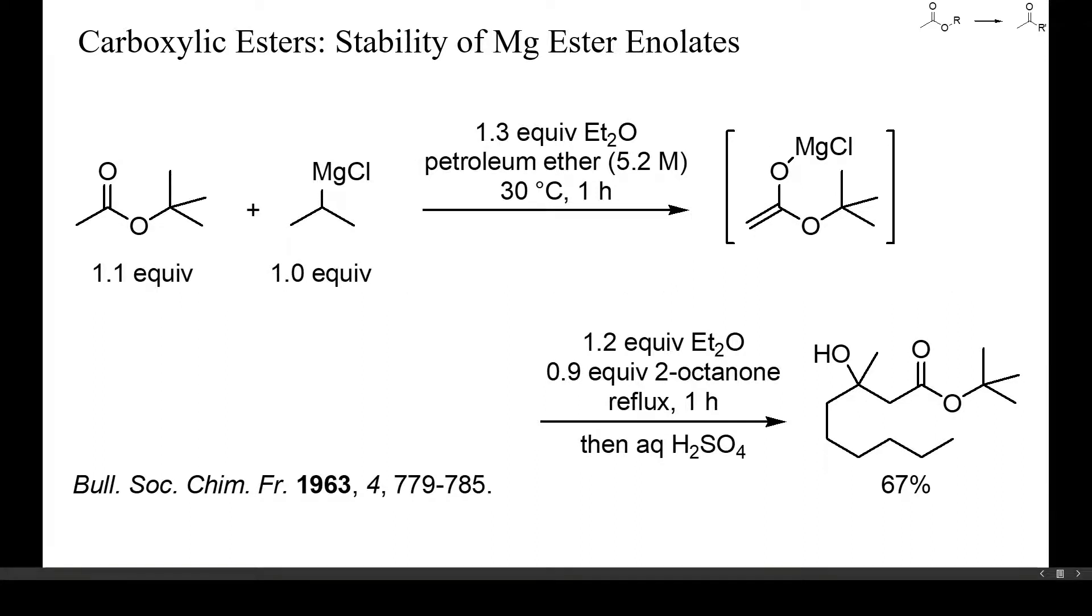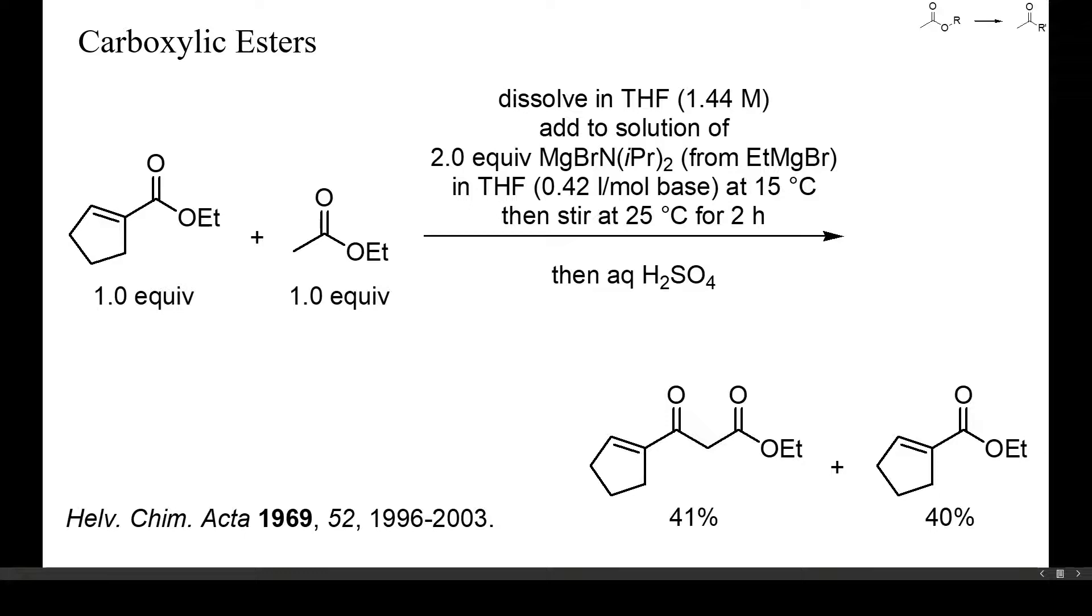Magnesium enolates seem to be slightly more stable than alkali enolates, but not much. In this example, the magnesium enolate of tert-butyl acetate was generated with isopropylmagnesium chloride and then added to octanone.